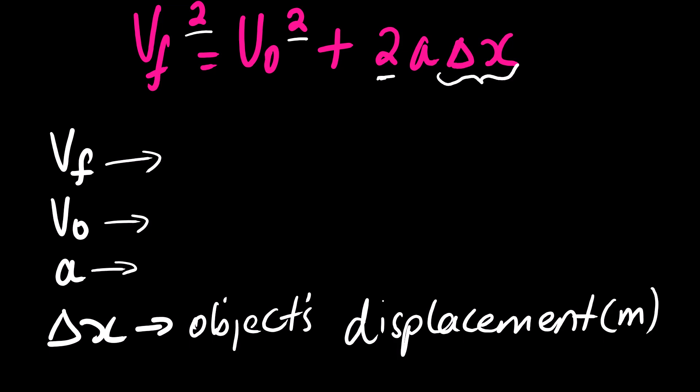For V final, we already explained that one. We also have initial velocity and acceleration. The only symbol that we haven't covered yet is change in X, which is the object's displacement measured in meters. So to explain this equation, you simply write the previous explanations for these symbols, and then we have object's displacement in meters.